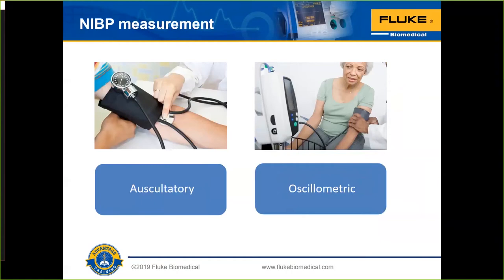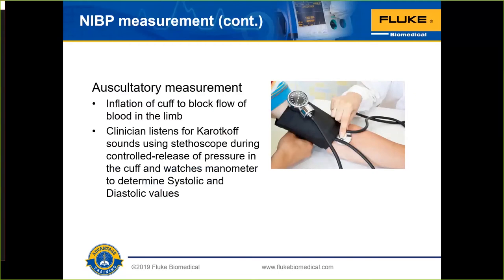There are two general ways we determine non-invasive blood pressure. The first is auscultatory — the way nurses and doctors have been taught in school. When you go to the doctor's office, they take a blood pressure measurement this way, auscultatory. Or, increasingly nowadays, they use an automated blood pressure device, which is an oscillometric device. In auscultatory measurement, we inflate the cuff until we block the flow of blood in the limb where we're listening to the blood vessel.